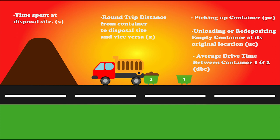So, if we look at it, the terms PC (picking up the waste), UC (unloading the waste), and DBC (the average time required to travel between containers) will all fall under the category of pickup time.